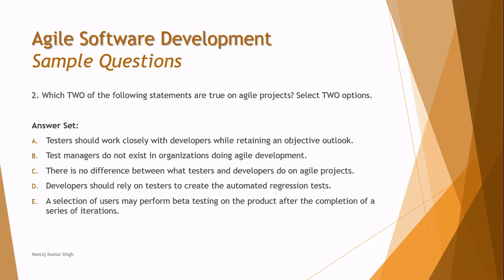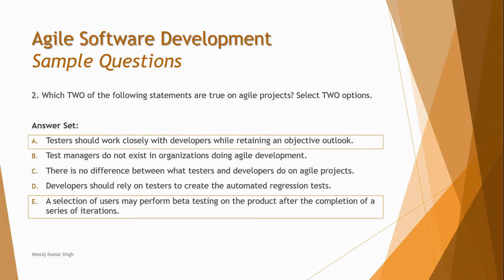Option D: developers should rely on testers to create automated regression tests — in agile, developers can also create automated tests. Option E: a selection of users may perform beta testing on the product after the completion of a series of iterations — that is something unique about agile. So the right answers are A and E.